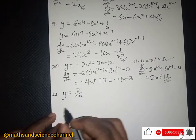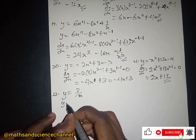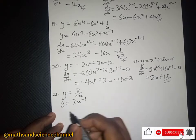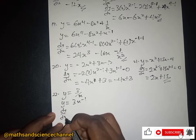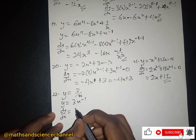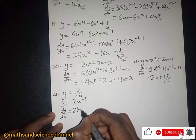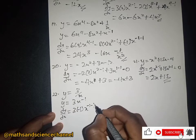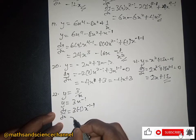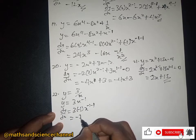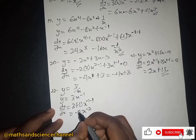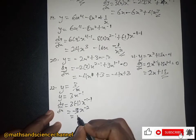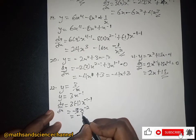Example 22: y equal to 3 over x. This can be written as 3x to the power negative 1. The dy/dx is — 3 times negative 1, then subtract 1 from the exponent — so we just have negative 3x to the power negative 2, which can be written as negative 3 divided by x squared.